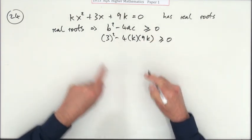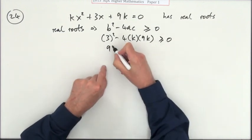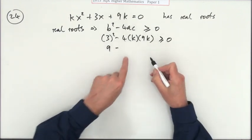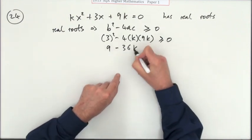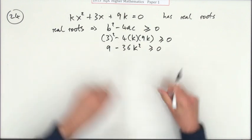Now you have to watch because you're going to have an inequality here. So that's going to be 4, 9s are 36, minus 36k² is greater than or equal to zero.